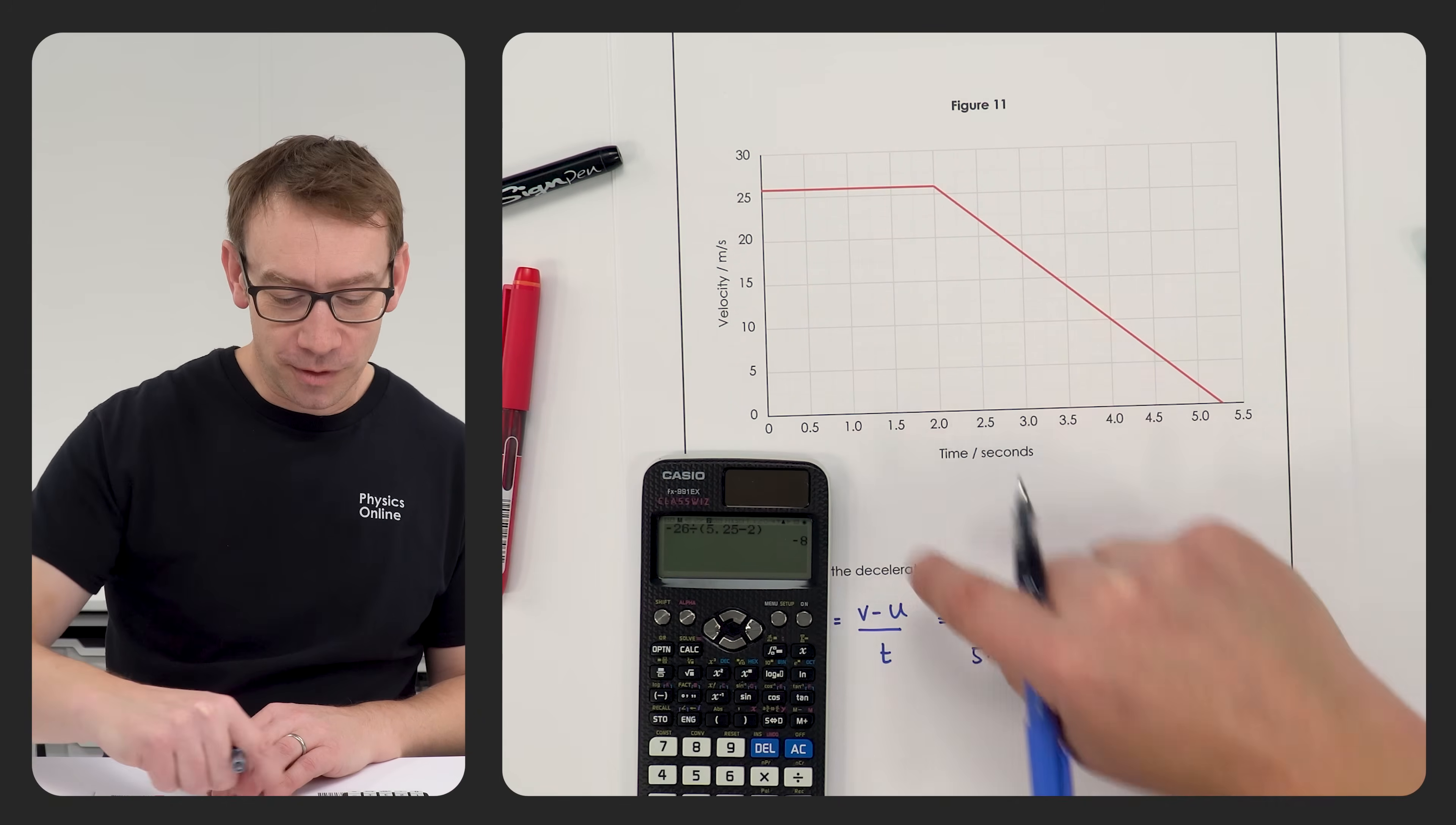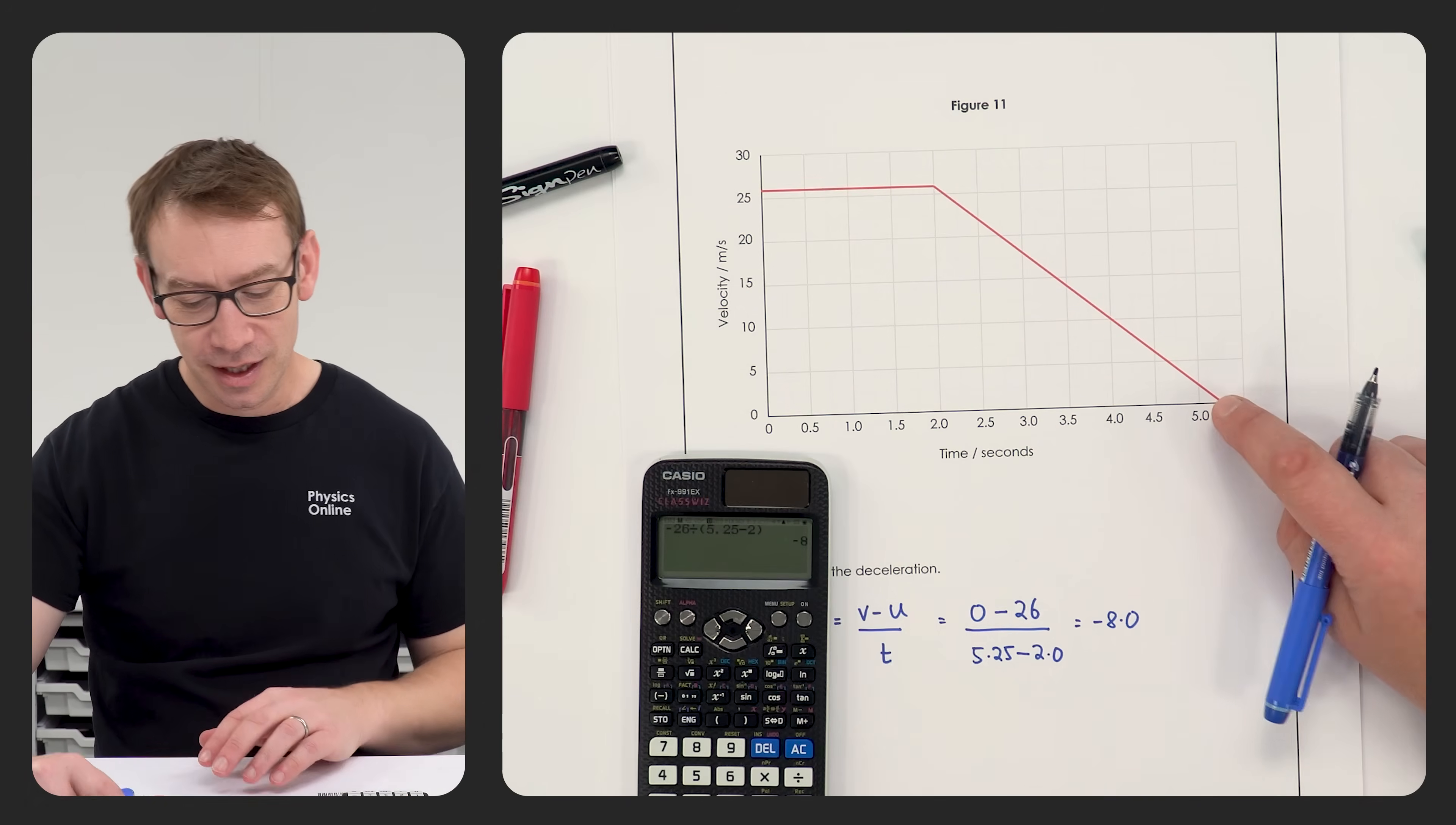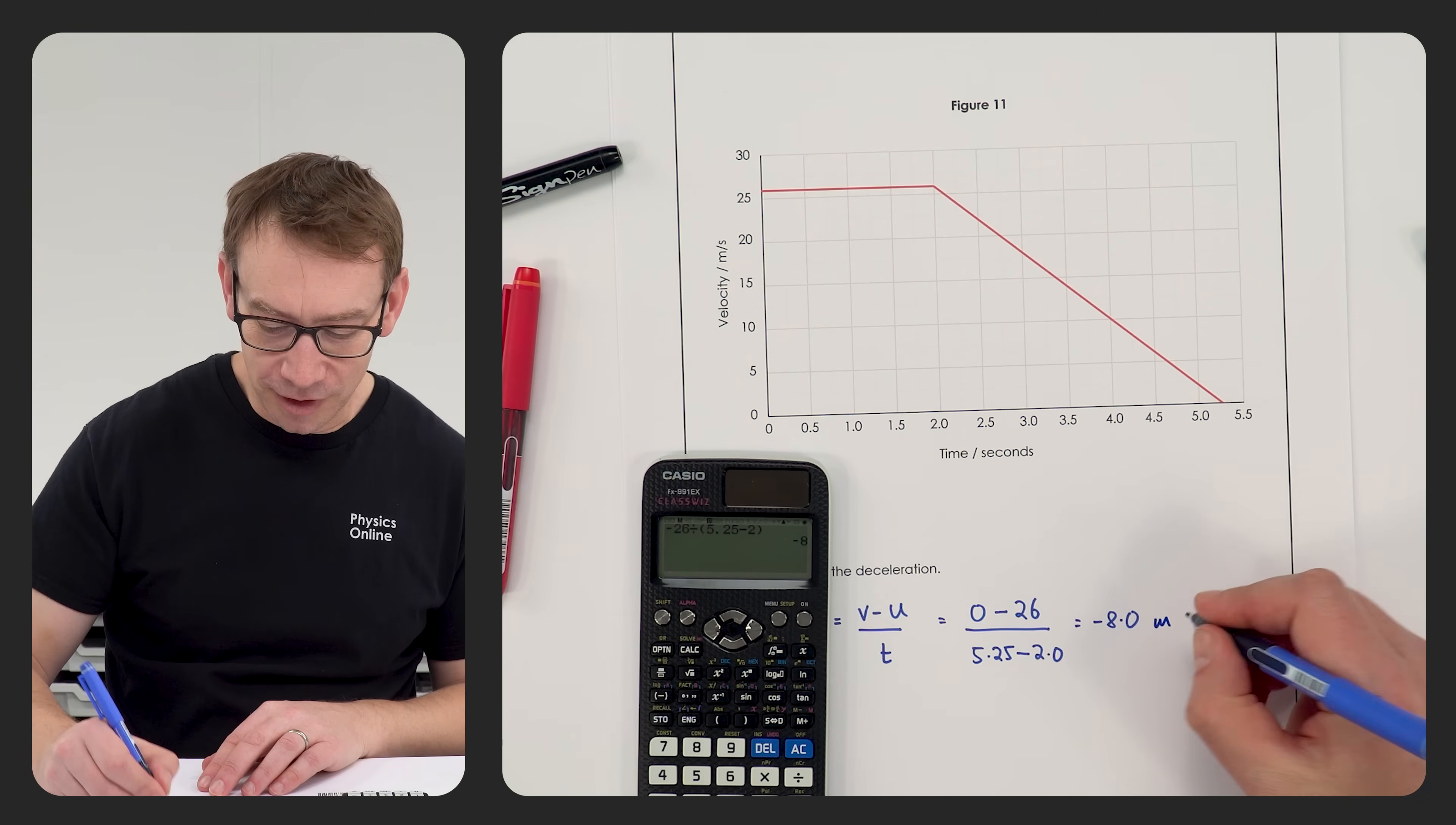Now we've got one mark for actually working at the gradient of that line or looking at this point and this point. We've got another mark for writing down the answer, but the third mark that people forgot was about actually using the correct units.